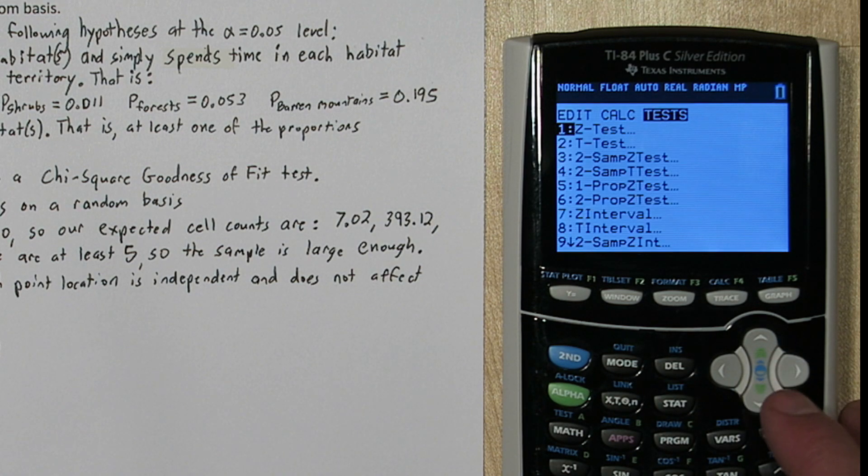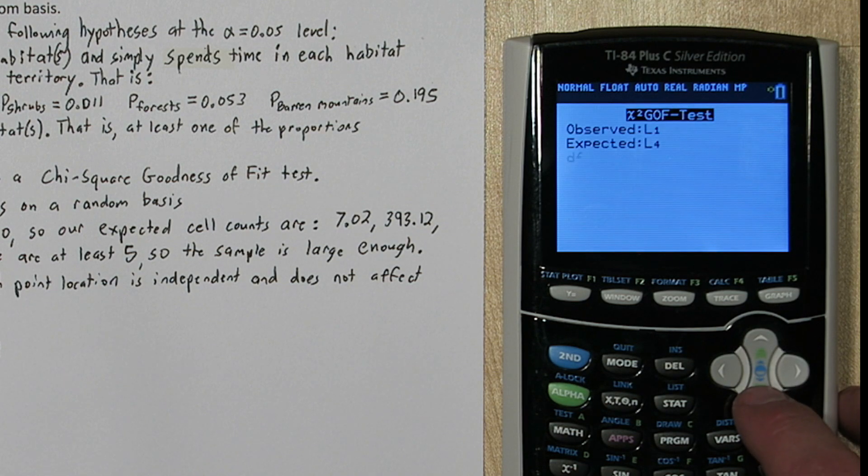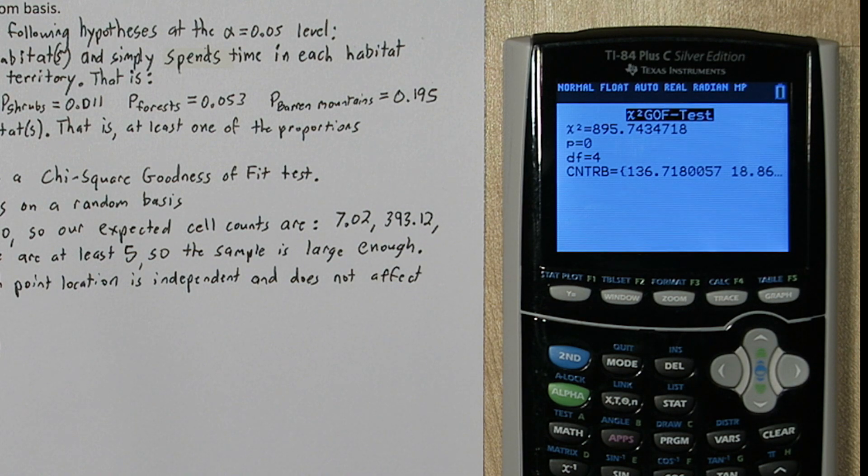I'm going to press stat again, and instead of pressing draw, I'm going to go to calculate. All right, so there's our chi-square test statistic and our p-value.